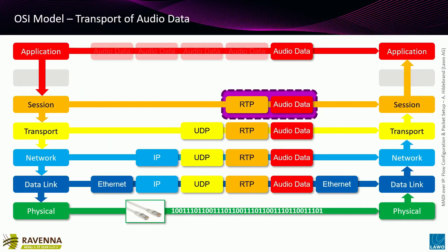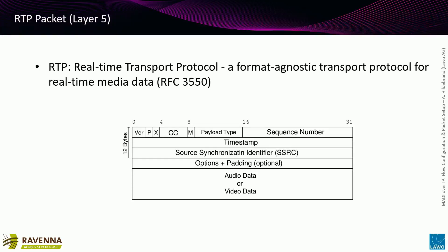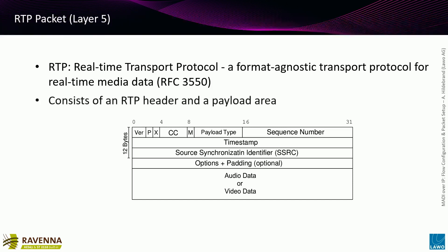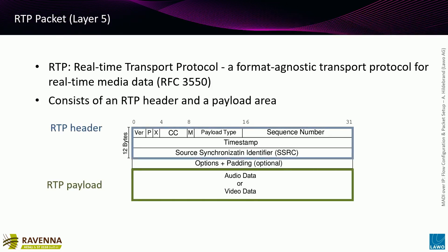We want to look closely at how we configure our audio packets to transport MADI over IP. Looking at the RTP transport protocol: the packet is defined by RFC 3550, the most famous RFC for audio and video. It consists of the RTP header and the payload area. RTP has control information in the header - 12 bytes - and the payload is where the audio or video data actually lives.